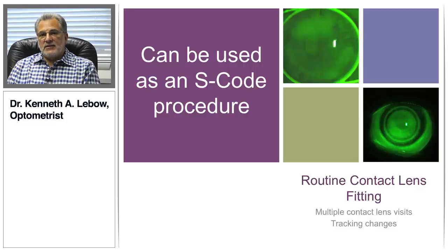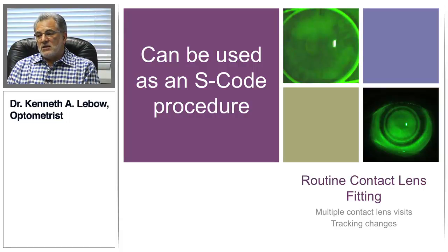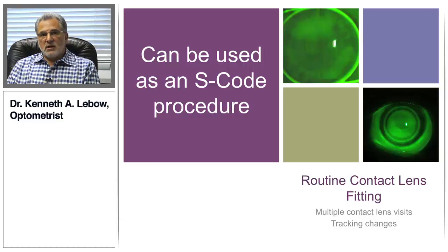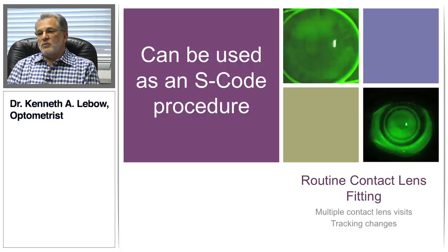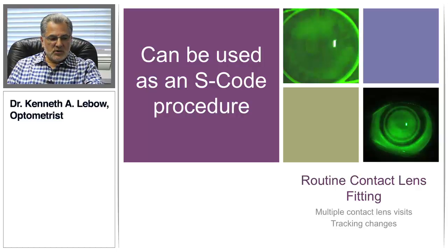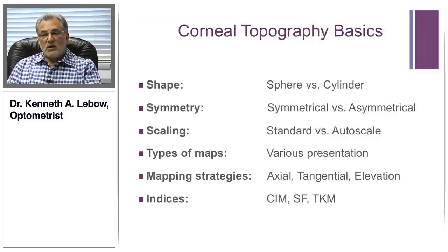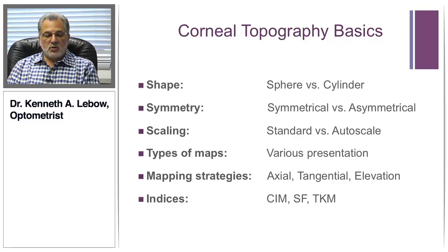However, there are a number of other procedures, mainly in the fitting of contact lenses, where medical reimbursement simply doesn't happen. What we use in practice is what's called an S code — it's not insurance reimbursable, so we bill that procedure to the patient. With my contact lens fits, we bill that once and it covers all the times we use the procedure. It's another way to raise your fees by utilizing an S code for corneal topography.